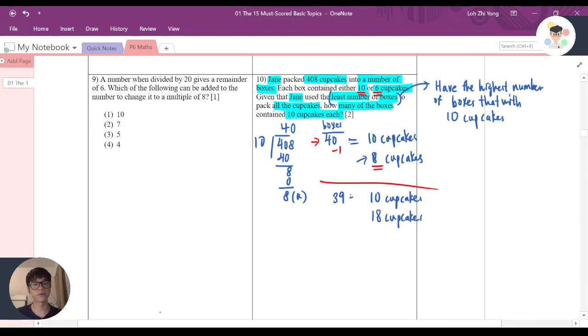Now okay, does it make sense? 18 cupcakes - actually if you know, this 18 is a multiple of 6 because we know 3 times 6 is equal to 18. So that means I have 3 boxes that can contain 6 cupcakes each. That's why 3 times 6 is equal to 18, and if you're able to see, it fits all 408 cupcakes.